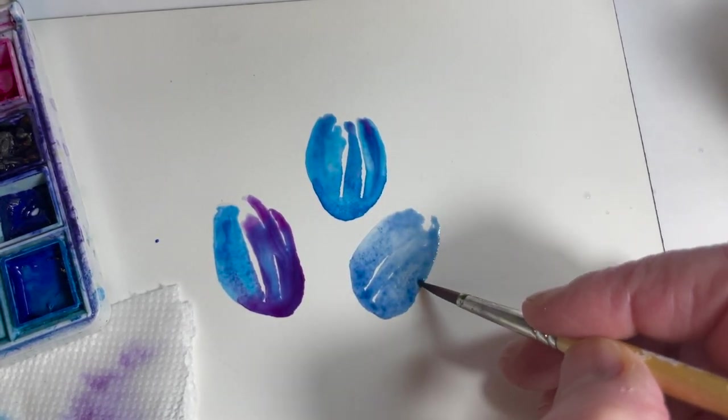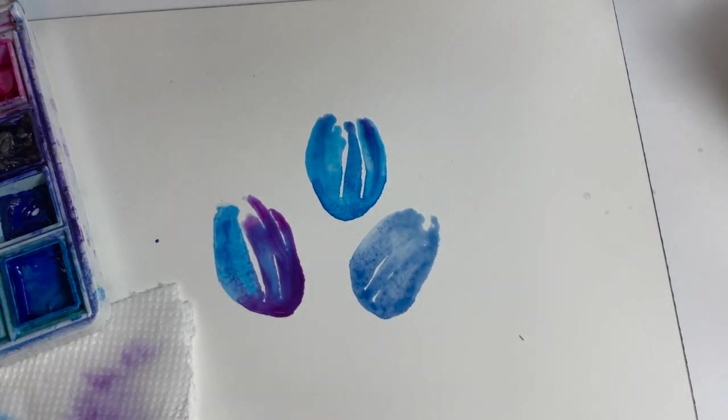So those are the bud shapes. They have to dry completely before the next step.